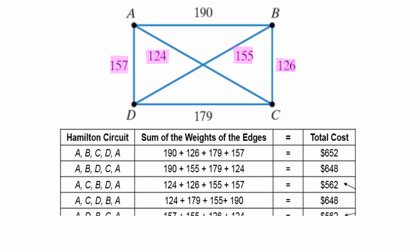ADBCA: 157, 155, 126, 124 for $562 again.